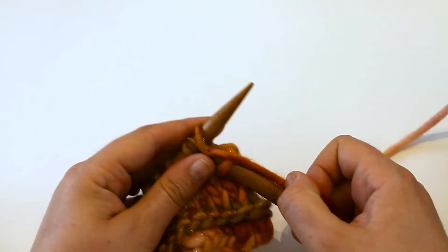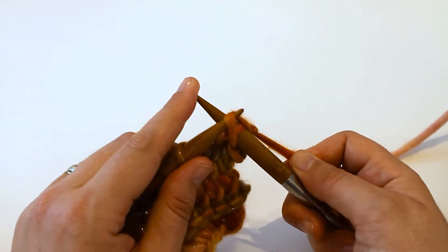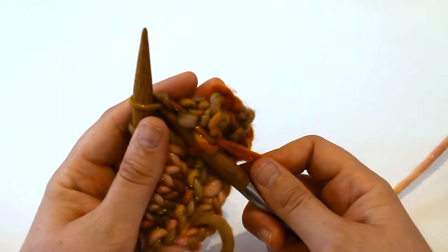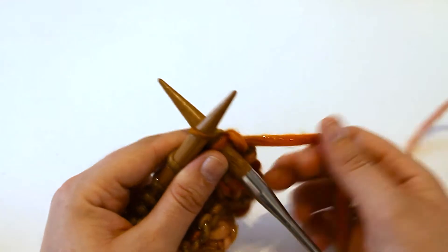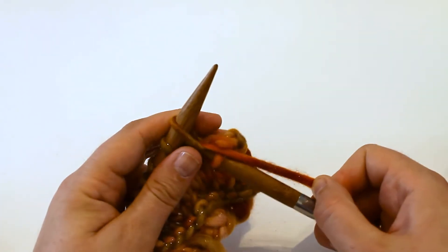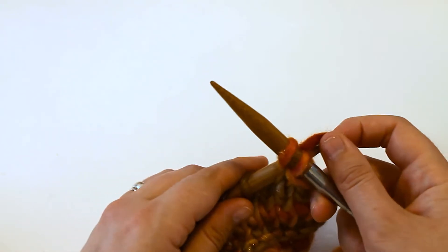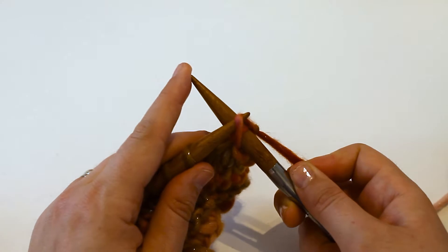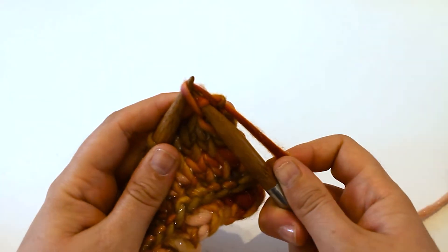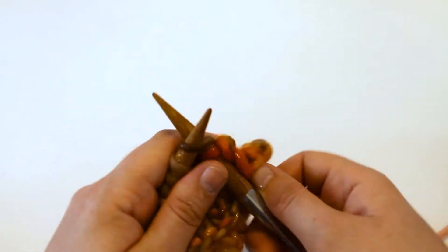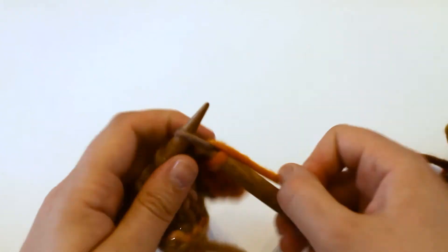And this is what we're going to repeat along the whole row to cast off your work and create a nice seam along the top. Pop your right needle through the loop on the left, make a knit, pull that off and then use your left needle to hook under the right loop, pull it over the tip of the right hand needle and down so you're left with one loop. And you just repeat this until the end.